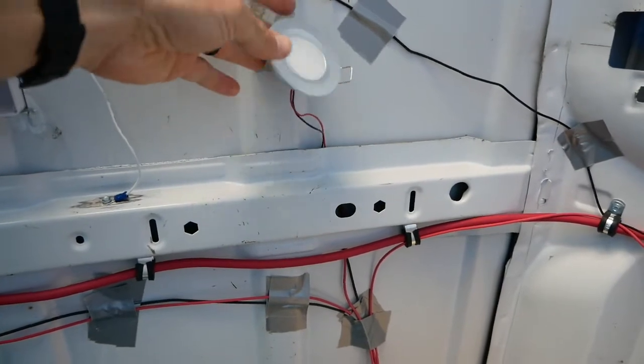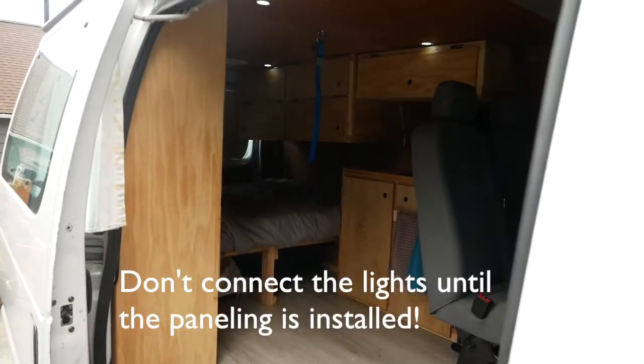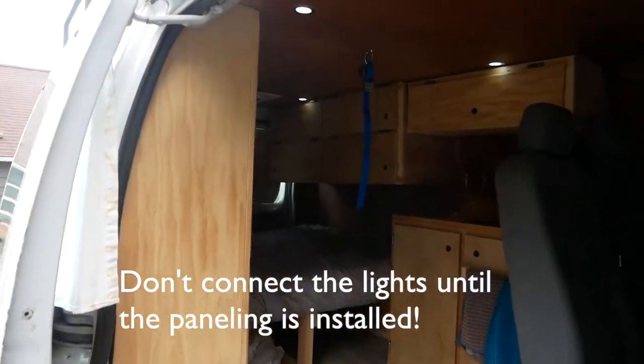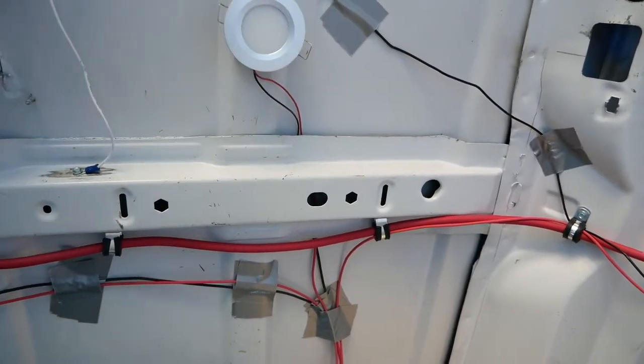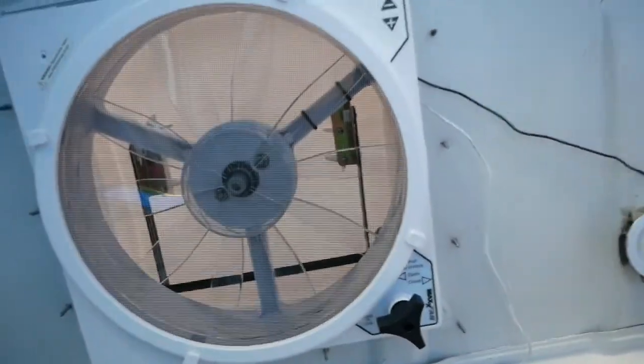The lights are just wired up right now with a little duct tape. Eventually they'll go into the paneling that we're going to put up here, but I wanted to get all the wiring in before we do the paneling so we don't have to mess around with that afterwards.